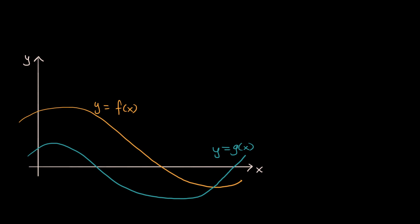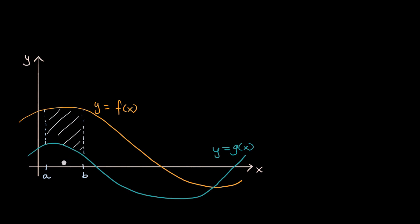We have already covered the notion of area between a curve and the x-axis using a definite integral. We are now going to extend this to think about the area between curves. So let's say we care about the region from x equals a to x equals b between y equals f of x and y equals g of x. That would be this area right over here. So based on what you already know about definite integrals, how would you actually try to calculate this?